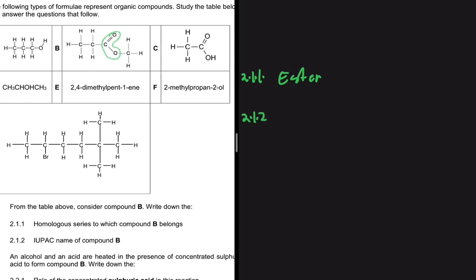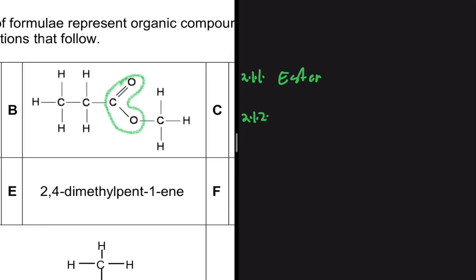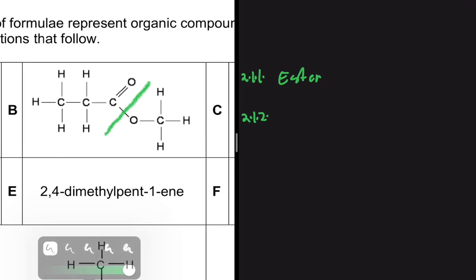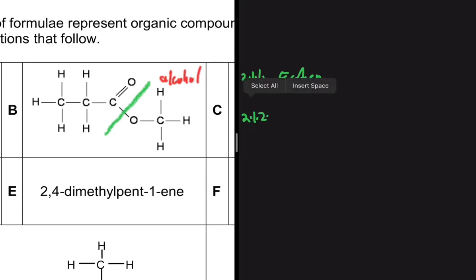For question 2.1.2, we're looking for the IUPAC name of the same compound. To name an ester, you come to the structure and put a line that divides the oxygen with the double bond from the oxygen with the single bond. The part with the single bond oxygen comes from the alcohol, and the part with the double bond oxygen comes from the acid — because to form an ester you need an alcohol and an acid in the presence of H₂SO₄.